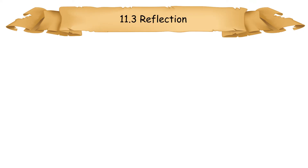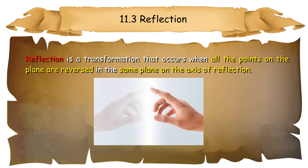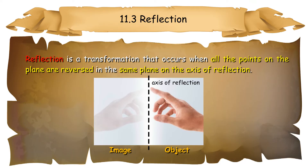11.3 Reflection. Reflection is a transformation that occurs when all the points on the plane are reversed in the same plane on a line called the axis of reflection. Features of reflection: 1. The object and the image are on opposite sides of the axis of reflection. 2. They have the same perpendicular distance from the axis of reflection. 3. The shape and size are the same, but orientation is reversed, forming mirror images. 4. The image of a point on the axis of reflection is the point itself.